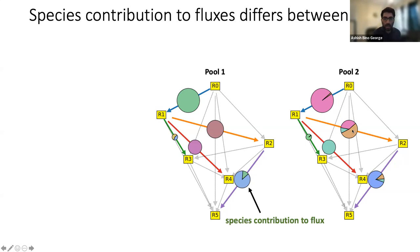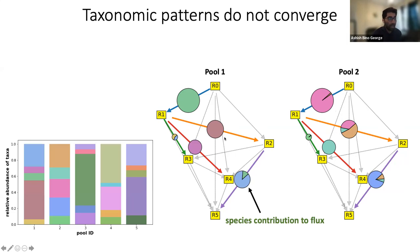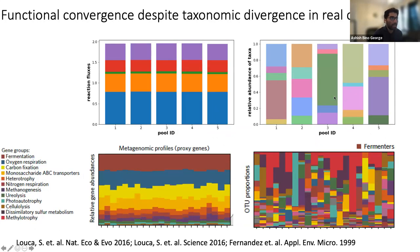This shows that communities seem to converge in terms of their metabolic function. Now the obvious question is: do species play identical roles? We measure how species contribute to the different reactions in each pool and find that these contributions differ between pools. For example, the reaction R1 to R2 is catalyzed by a single species in pool one but three different species in pool two. This pattern is also manifested in the bar plot of relative abundance of taxa, which do not show convergent patterns.